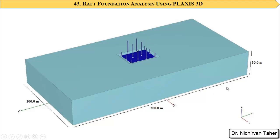We are going to use a large boundary condition to decrease the effect of boundary conditions on the results. We will have 200 meters in the Y direction and 100 meters in the X direction. The soil is a single layer which is 30 meters high, and we will have a rough foundation with excavation.